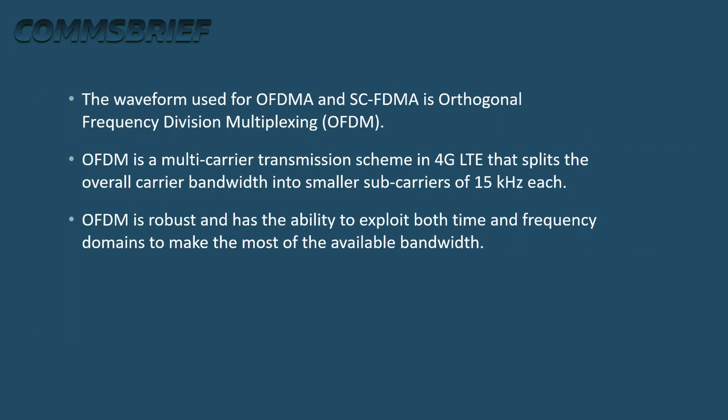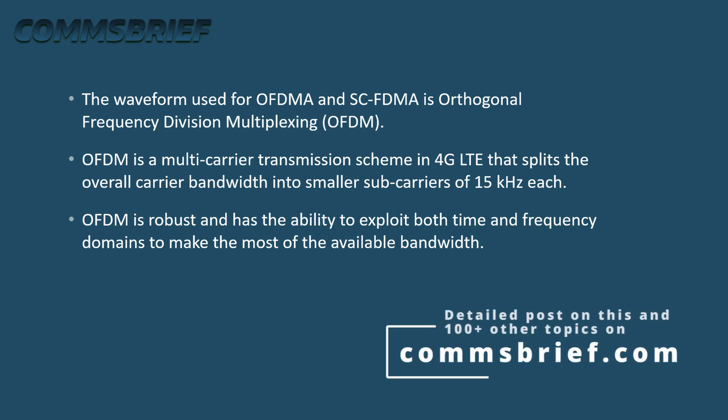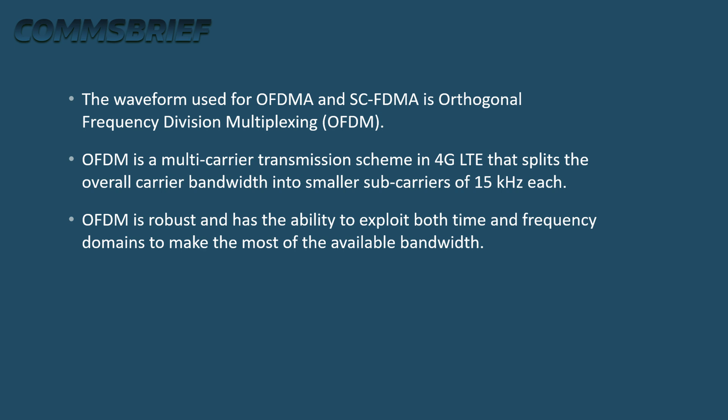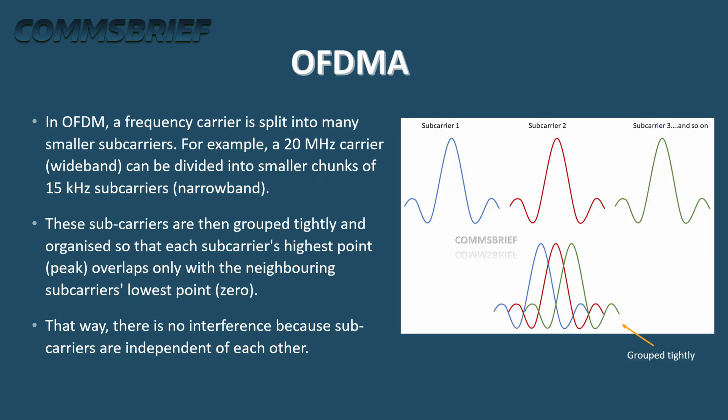The waveform used for OFDMA and SCFDMA is Orthogonal Frequency Division Multiplexing, or OFDM. OFDMA is a multi-carrier transmission scheme in 4G LTE that splits the overall carrier bandwidth into smaller sub-carriers of 15 kHz each. OFDMA is robust and has the ability to exploit both time and frequency domains. For example, a 20 MHz wideband carrier can be divided into smaller chunks of 15 kHz narrowband sub-carriers.